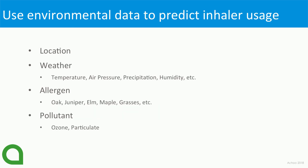The data we use to predict his inhaler usage includes location, weather data — temperature, air pressure, precipitation, humidity, et cetera — and allergen data of all types. In Nashville we have a huge pollen problem, so intuitively it made sense that pollen, weather data, and pollutant data play a part in his inhaler usage.